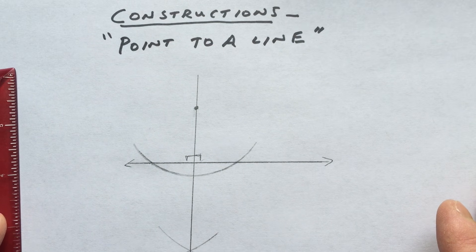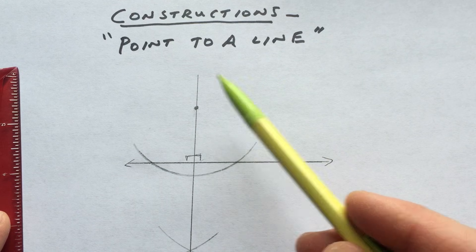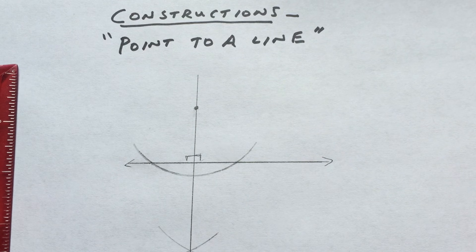So this is how you find the shortest distance from a point to a line using constructions. Go ahead and review the video if you need to, and I'll see you in the next video.